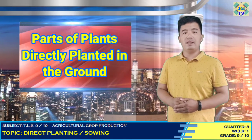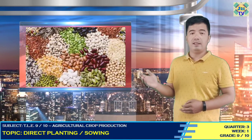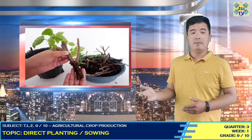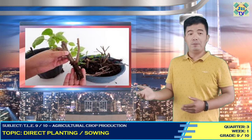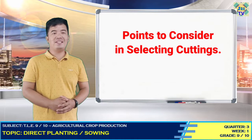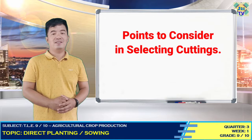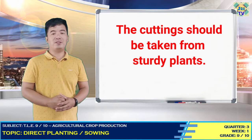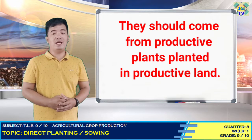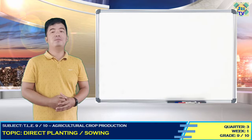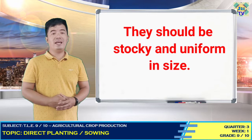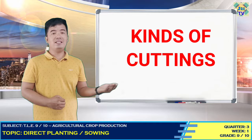Parts of plants directly planted in the ground are seeds and cuttings. Cuttings are pieces of stem placed under suitable conditions which will produce new plants. Points to consider in selecting cuttings: first, the cuttings should be taken from standard plants; two, they should come from productive plants; three, they should be free from diseases and insect pests; four, they should be stocky and uniform in size.